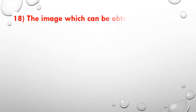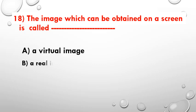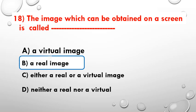The image which can be obtained on a screen is called — option A: real image, option B: virtual image, option C: either a real or virtual image, option D: neither real nor virtual. The answer is a real image.